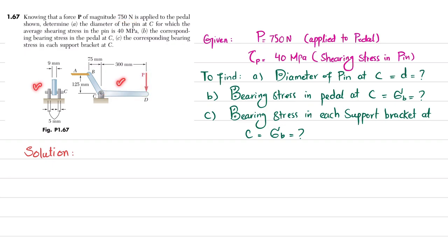You can see this is a pedal where a force P is applied. This is the frontal view and this is the side view. At point C, you have to find the diameter of this pin — in the first part — for which the shear stress is 40 megapascals. Then find the corresponding bearing stress in this portion and in the bracket.